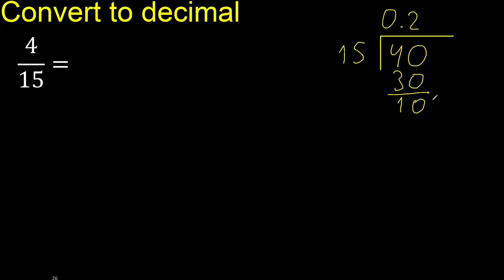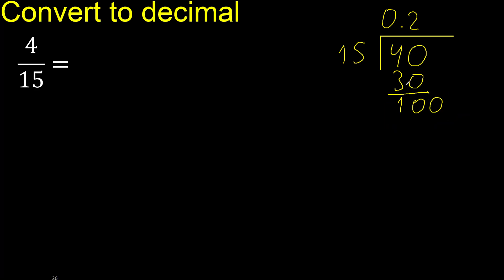There is no next digit, therefore complete — always complete with 0. Point is here. 0 point: 100.